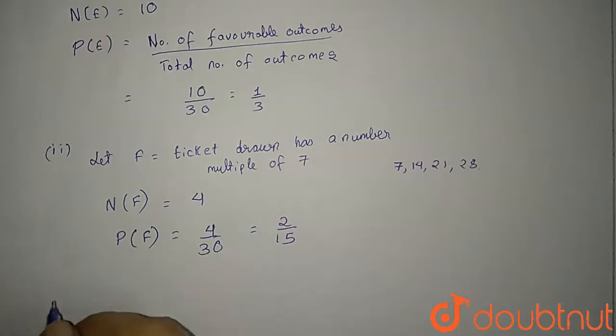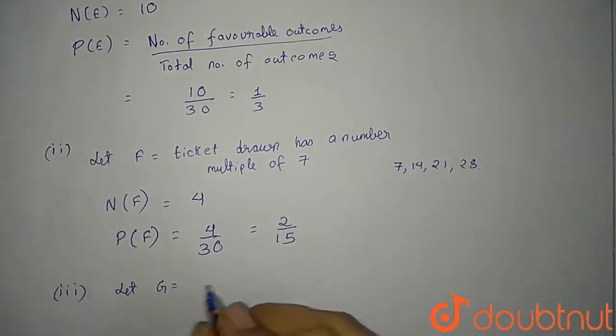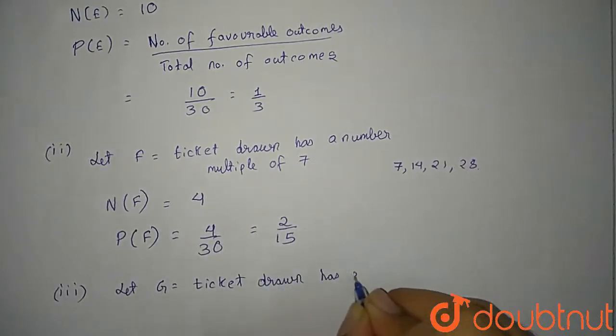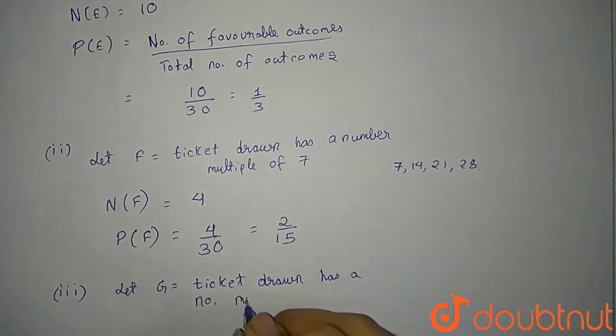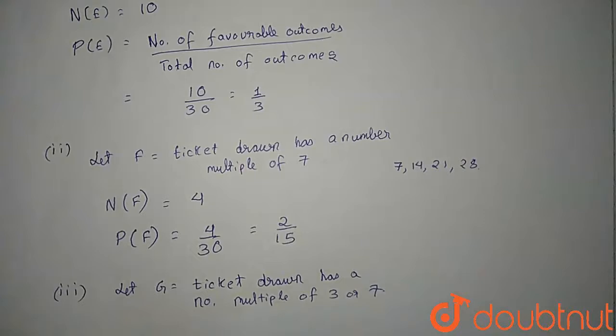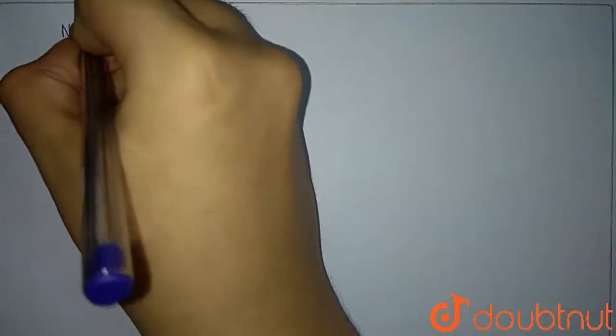Now let's move on to the third event. What is the third event? The third event is: let G be the event where the ticket drawn has a number that is a multiple of three or seven. This is an interesting case. Let's calculate N of G - the number of outcomes for our event G.